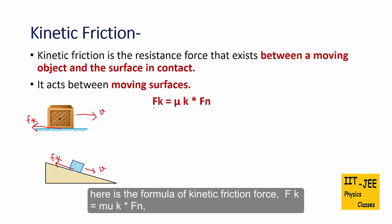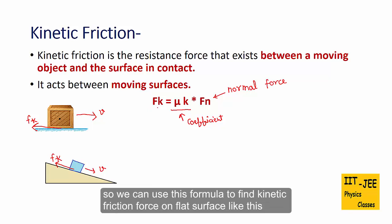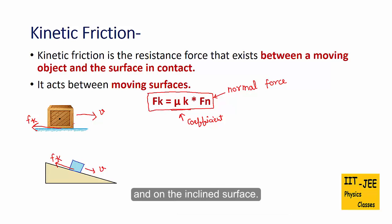Here is the formula of kinetic friction force. Fk equals μk times Fn. Here μk is the coefficient of kinetic friction. While Fn is the normal force on the box. So we can use this formula to find kinetic friction force on flat surface like this and on the inclined surface.